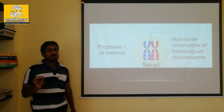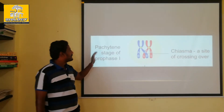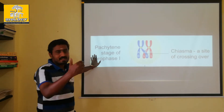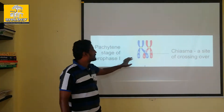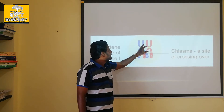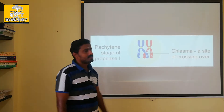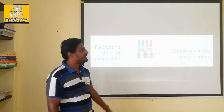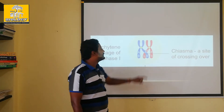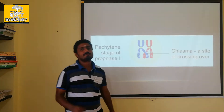So in Prophase I, tetrad formation will be processed, especially in the Pachytene stage. In the blue color it is non-sister chromatids, and in the red color — small a, small b — it is also non-sister chromatids. The interchange of genes in between the non-sister chromatids — that is the crossing over.